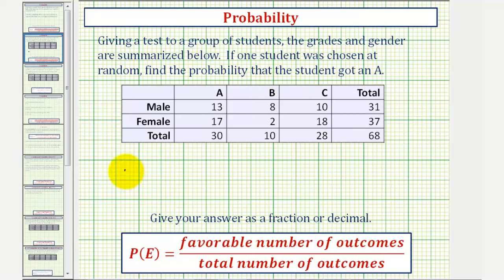So we want to find the probability that a random student received an A. Looking at the table, notice how this column here tells us the number of A students. There were a total of 30 A students, 13 of which were male, 17 of which were female.